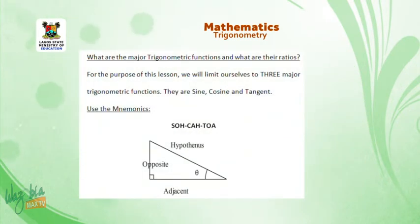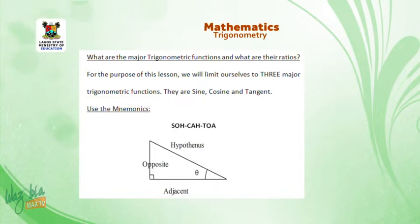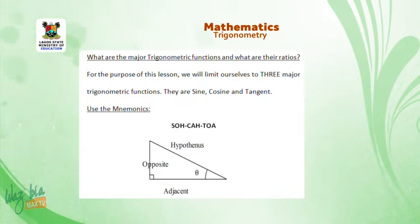For this lesson, we limit ourselves to three major trigonometric functions: sine, cosine, and tangent. We can easily remember them through the mnemonic SOHCAHTOA.